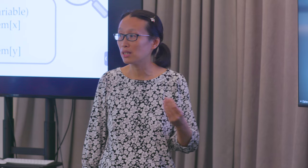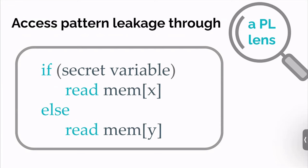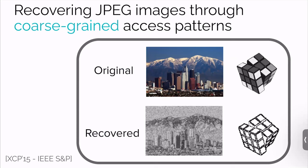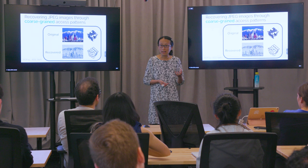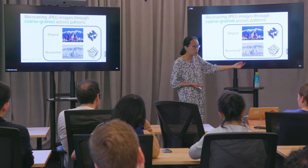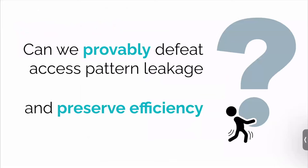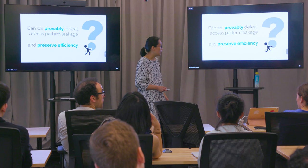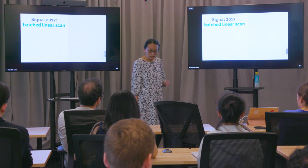From a programming language perspective, if your program has conditionals that depend on a secret variable — for example, if a branch depends on the last bit of a secret key — and different branches have different memory traces, then just by observing the memory traces, you can learn the value of the secret variable. There was also an actual attack by researchers at UT Austin and Microsoft Research: running off-the-shelf image processing software inside an SGX enclave, observing only coarse-grained page access patterns, they could pretty much recover the location and shape of objects. The question is: how can we provably defeat access pattern leakage while preserving efficiency?